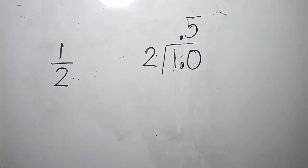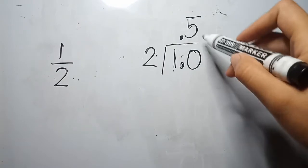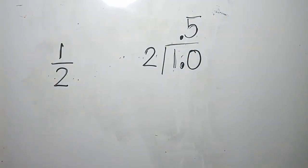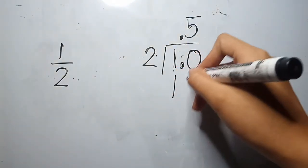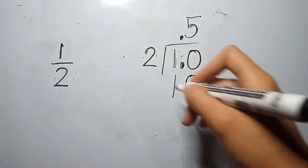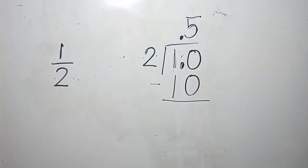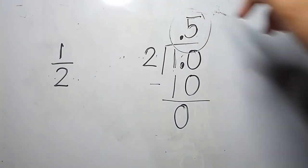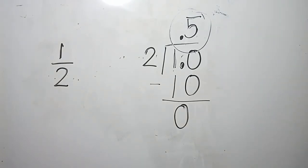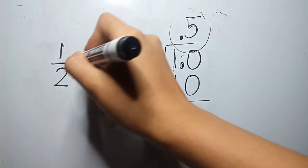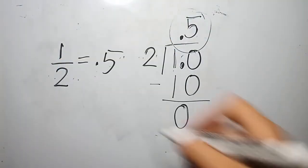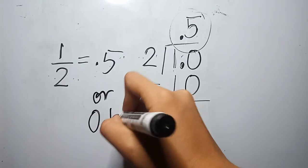We have 5 twos in 10. After dividing, we multiply the quotient, which is 5, times our divisor, which is 2. 5 times 2 gives us 10. After multiplying, we subtract: 10 minus 10 gives us 0. Therefore, the conversion of the fraction 1 half to decimal form is equal to 0.5.